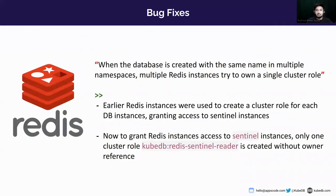A similar bug fix was applied for Redis. In earlier versions of KUBEDB, Redis instances were creating a cluster role for each database instance, resulting in unintended access grants to Sentinel instances. Now, in order to grant Redis instances access to Sentinel instances, only one cluster role named KUBEDB is created, and it is devoid of the owner reference.